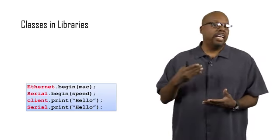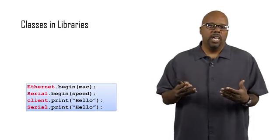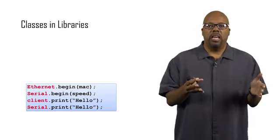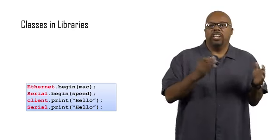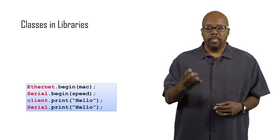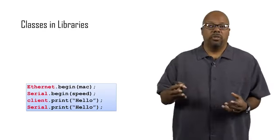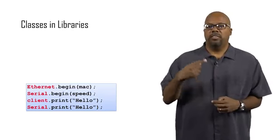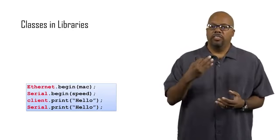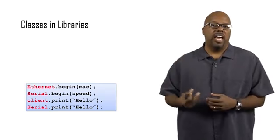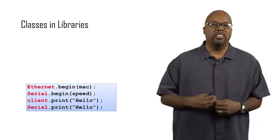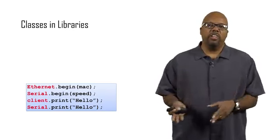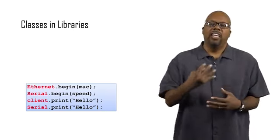Now, notice that Ethernet library and Serial library both have begin functions associated with them. And in order for the machine, the compiler, to know which one I'm referring to, I have to prefix it with the name of the library or the name of the class. So Ethernet.begin, Serial.begin, we get the same thing with the print. You can have a Serial.print, we'll cover that, where it prints something on the serial cable. But then, client.print, client is the name of an object that you can create inside the Ethernet library, and that does something completely different. Client.print actually takes that word hello and sends it as a message on the internet. So those two prints do completely different things, and you have to prefix the print with the name of the object, the name of the class, where the function comes from.